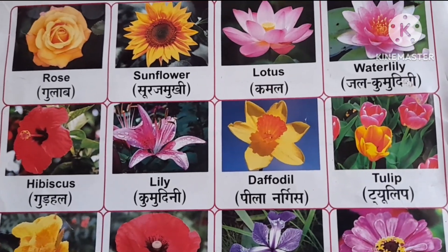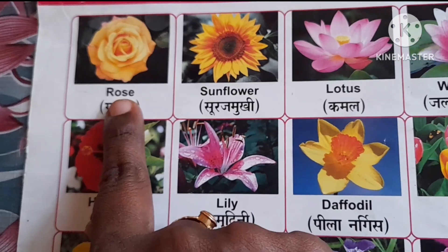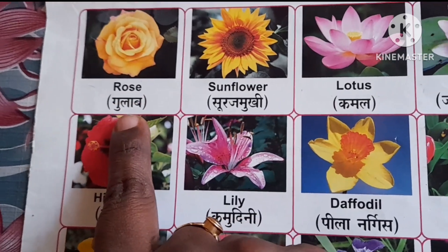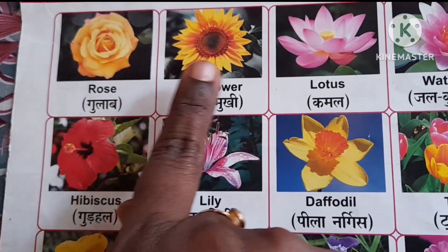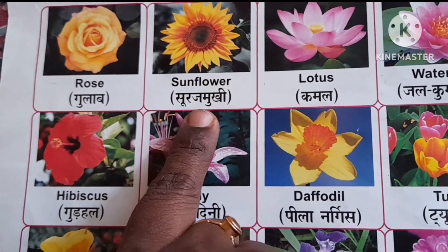So let's learn the flowers names. Rose, Gulab. Sunflower, Sooraj Mukhi.